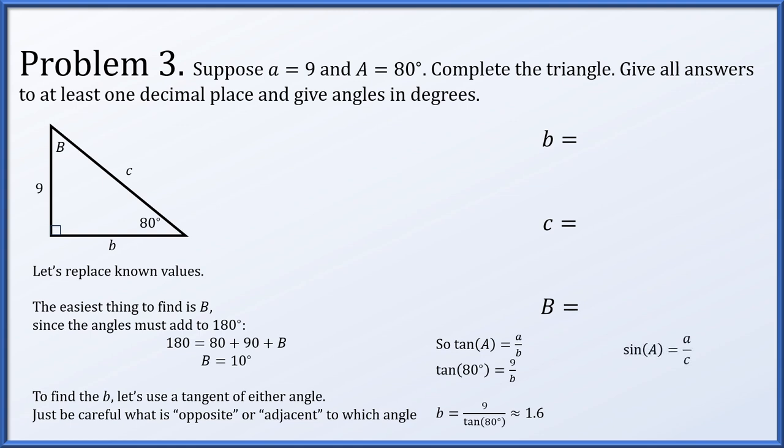Similarly, the sine of angle A is opposite over hypotenuse, which we can place known values in, then solve for the missing hypotenuse length, compute, and it's approximately 9.1. So here are our missing values.